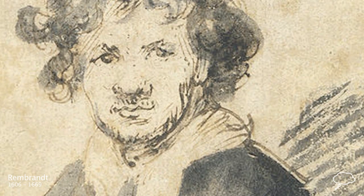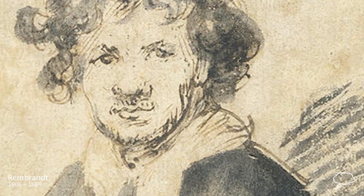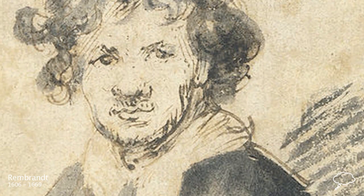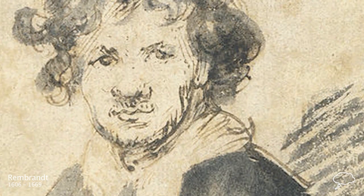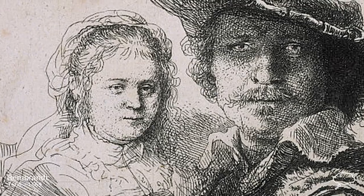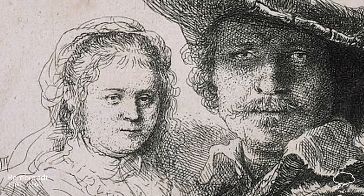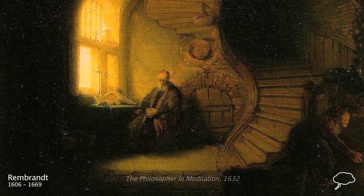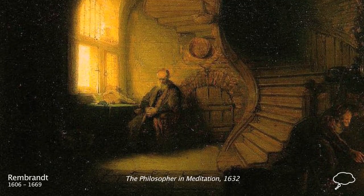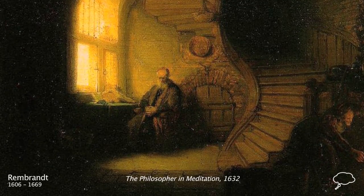Diverging from his contemporaries, Rembrandt endowed his etchings with a painterly quality, achieved through a suggestive handling of light and dark. His style soon took an innovative turn involving his use of light.